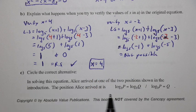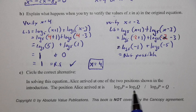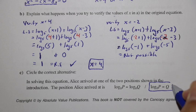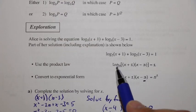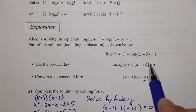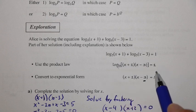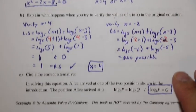In solving this equation, Alice arrived at one of the two possibilities shown in the introduction — specifically the form where log base 5 of the whole expression equals 1, and the next step was converting to exponential form: 5 to the exponent 1 equals the expression.